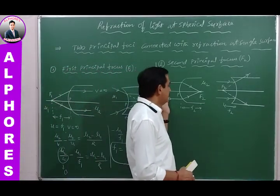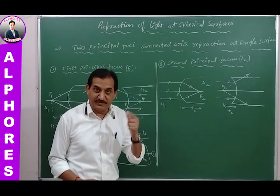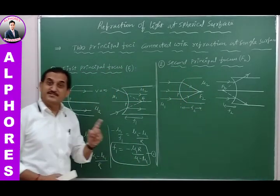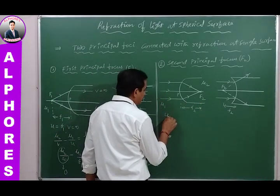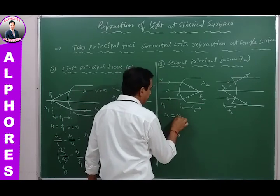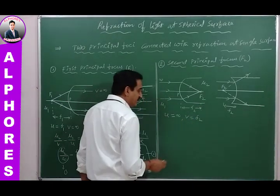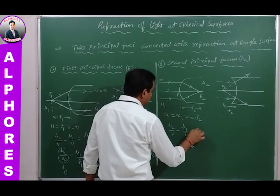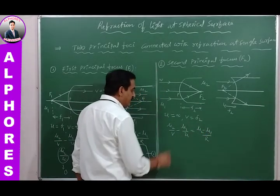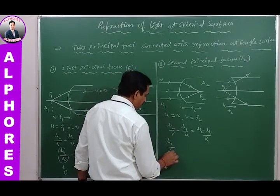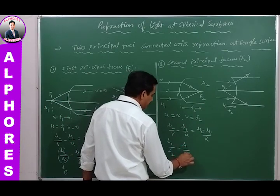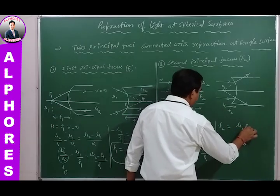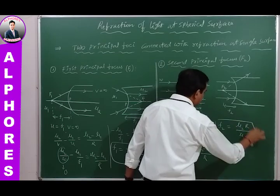For the second principal focus, the object is at infinity (U = ∞), and image distance V = F₂. Applying the refraction formula: μ₂/F₂ − μ₁/∞ = (μ₂ − μ₁)/R. Since μ₁/∞ = 0, we get F₂ = μ₂R / (μ₂ − μ₁). This is the second principal focus.